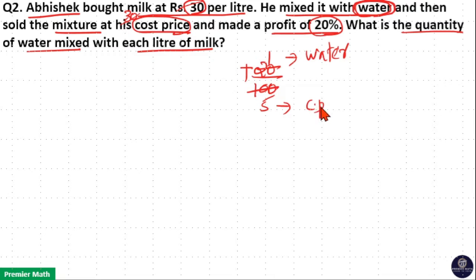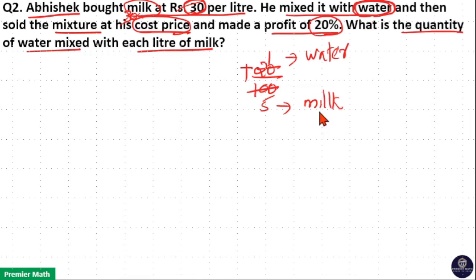The cost price of milk is 30 rupees per litre. So this cost price denotes the milk. Now this is the milk quantity — you can see 5 parts is the milk quantity and 1 part is the water quantity.